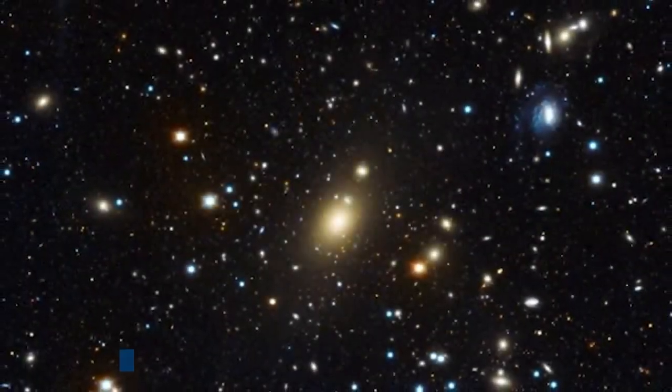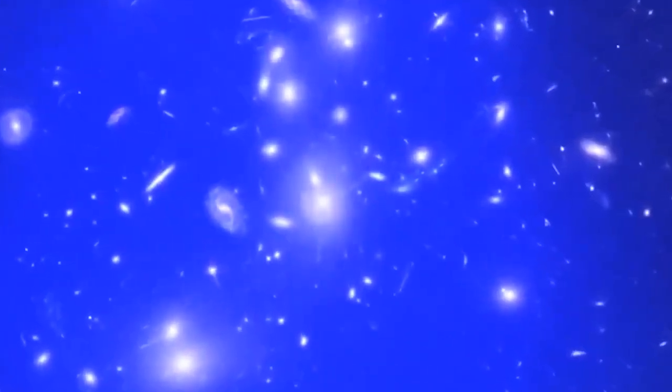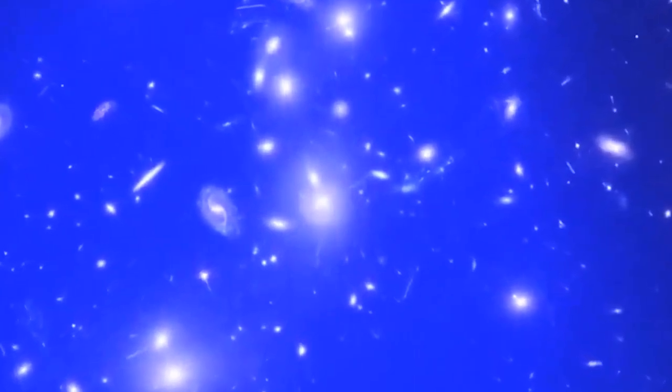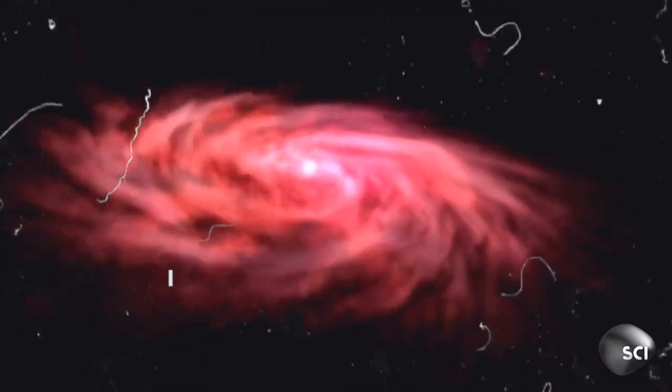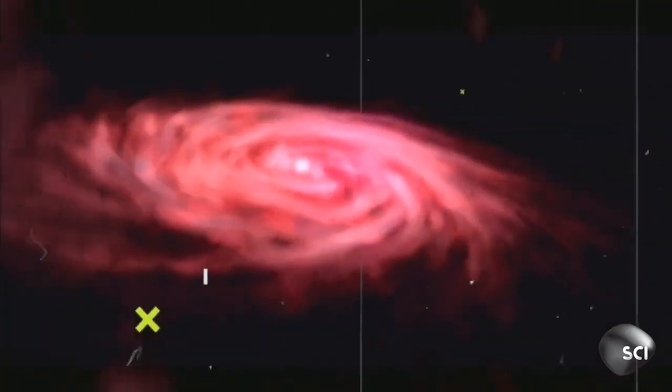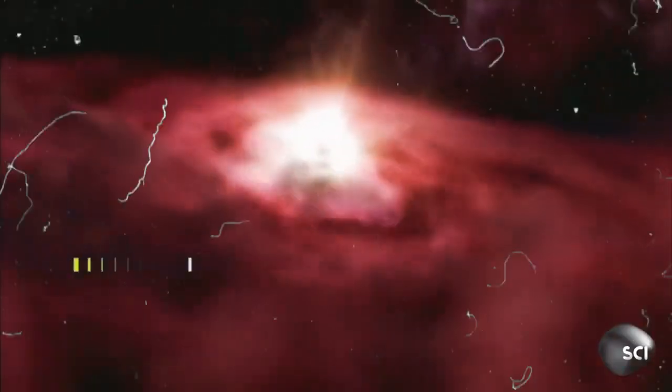With a stellar mass equivalent to 40 billion suns and impressive star production rate, Abel 2744Y1 is forming stars nearly 20 times faster than our Milky Way galaxy. This high rate of star formation at the beginning of the universe poses exciting questions, prompting astronomers to revisit theories of early galactic evolution.